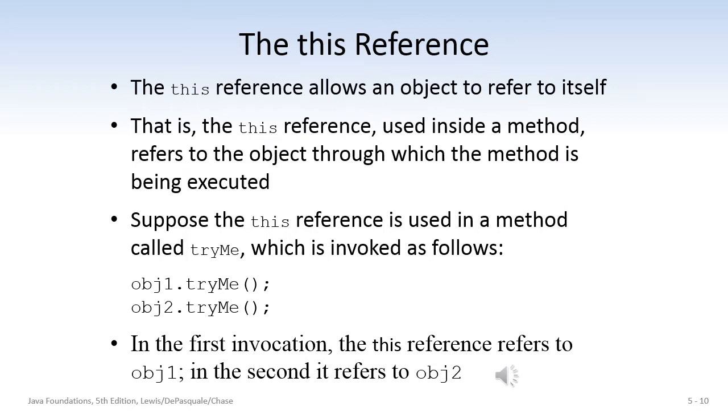Next, we take a look at the this reference. This can be a little confusing. The this reference allows an object to refer to itself. When the this reference is used inside a method, it refers to the object for which the method is being executed. For example, we have a method called tryMe. And let's suppose that tryMe uses the this reference inside of it. So obj1.tryMe invokes the tryMe method, and it refers to obj1. When obj2 invokes the tryMe method, it refers to obj2.